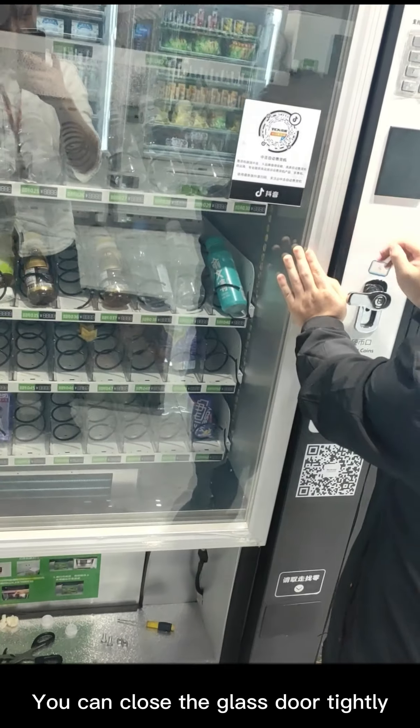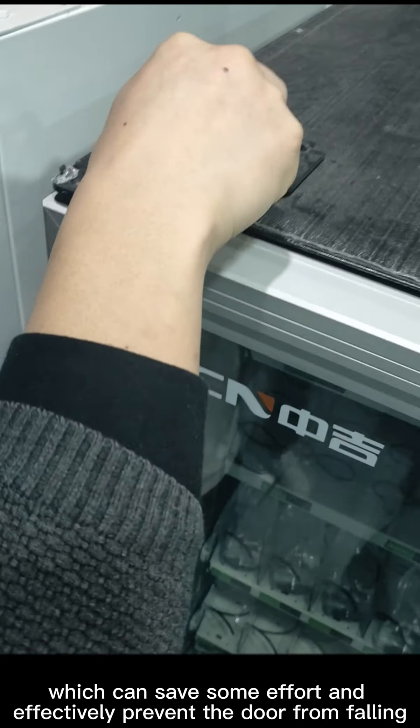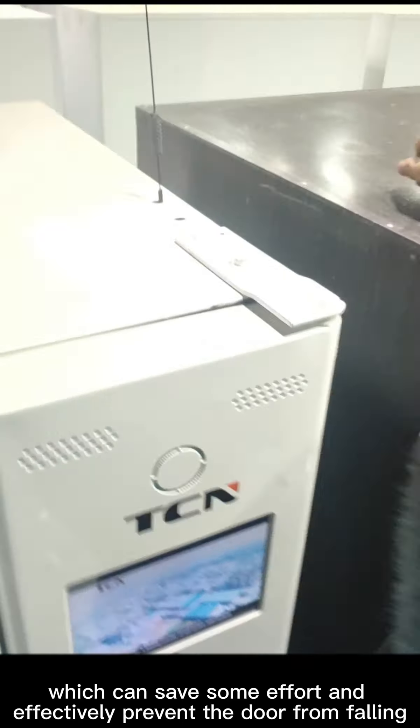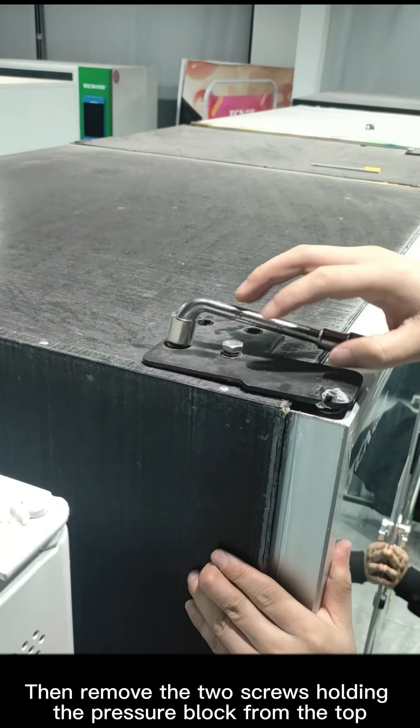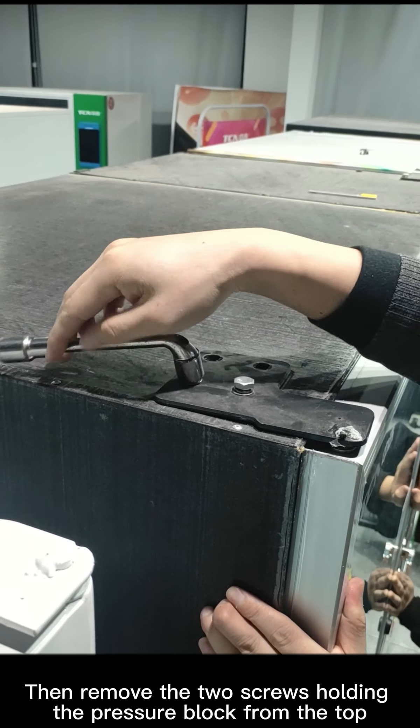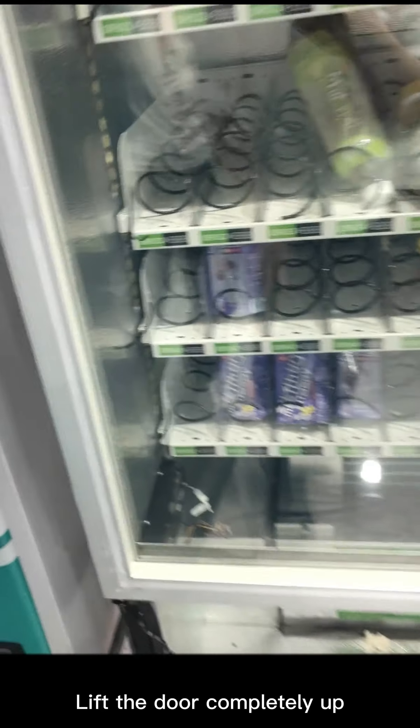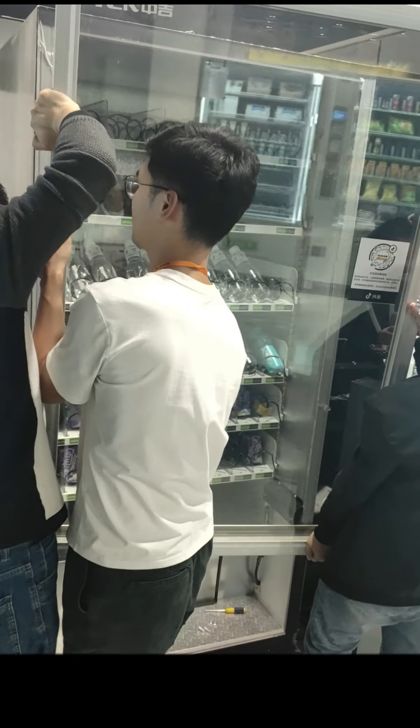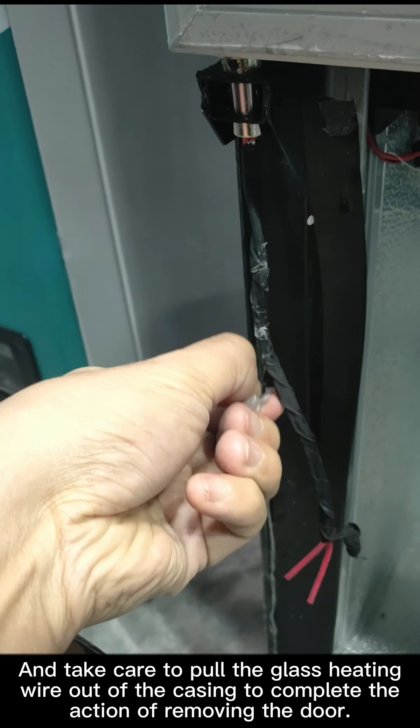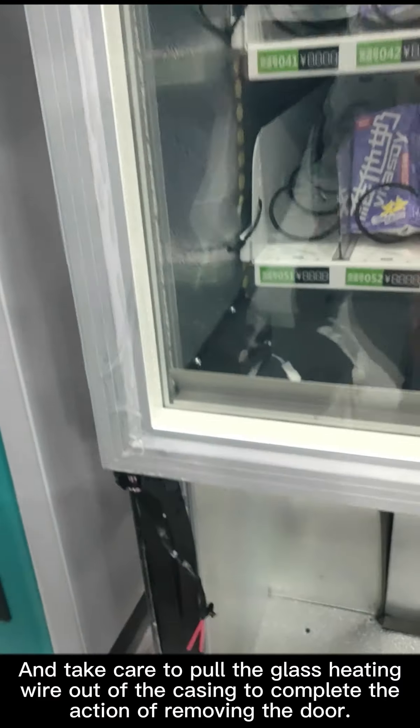Next, you can close the glass door tightly, which can save some effort and effectively prevent the door from falling. Then remove the two screws holding the pressure block from the top, and the pressure block can be completely removed. Next, lift the door completely up and take care to pull the glass heating wire out of the casing to complete the action of removing the door.